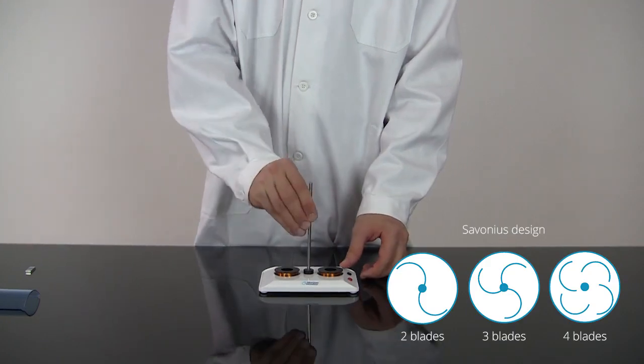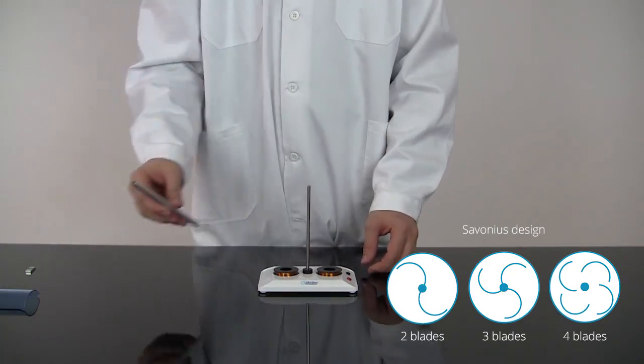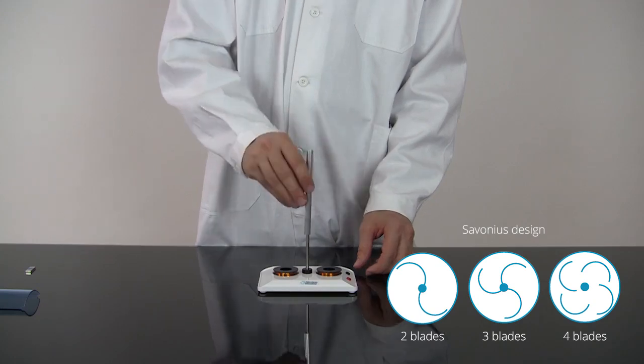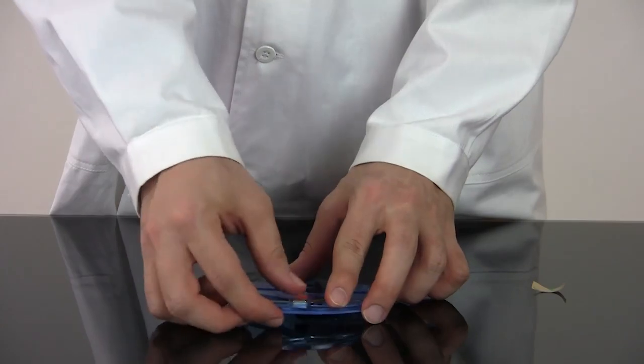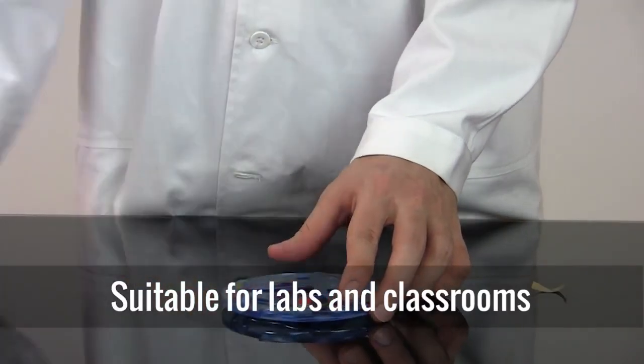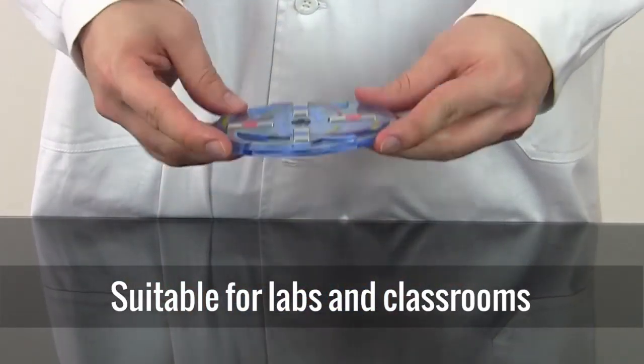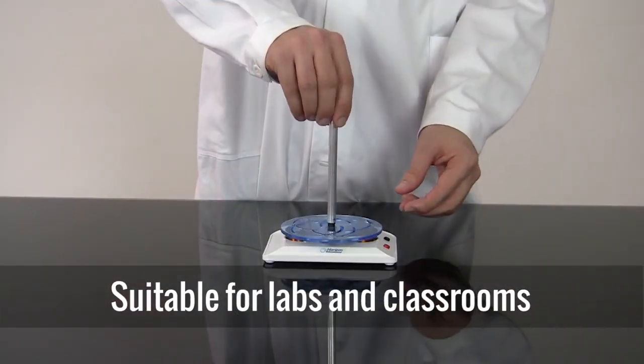The Savonius-style turbine can be easily assembled, allowing students to begin generating electricity in minutes. And the small footprint allows for wind experiments to be run in labs and classrooms where larger turbines might not fit.